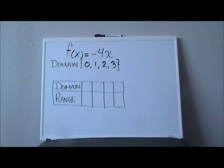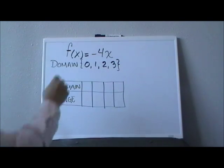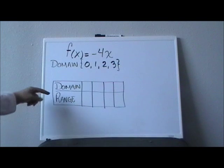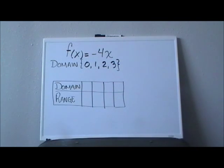For some of you, seeing something like this looks very confusing. We have a functional notation, we have domain, and then on top of it you have to come together with a t-chart. But this actually is very easy, and as a matter of fact, this is a lot easier than many things you have done before.